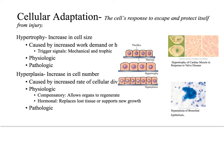If the abnormal stimulus is removed, the cells can respond again and this time reduce their cell size and cell number, returning to normal.